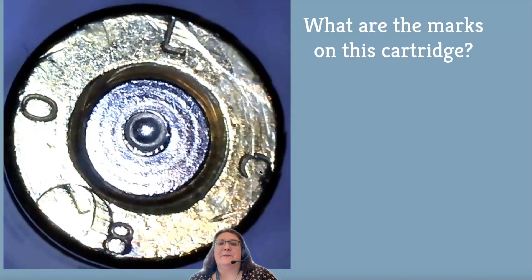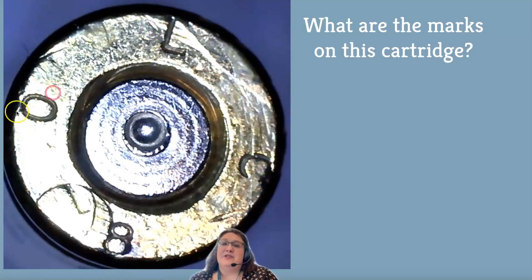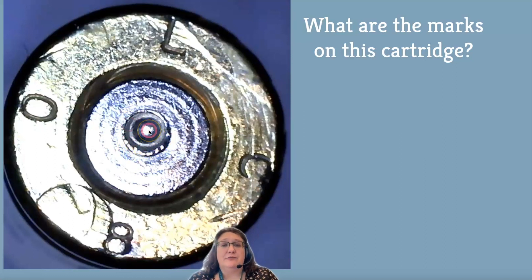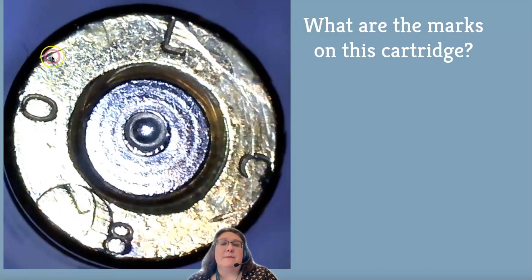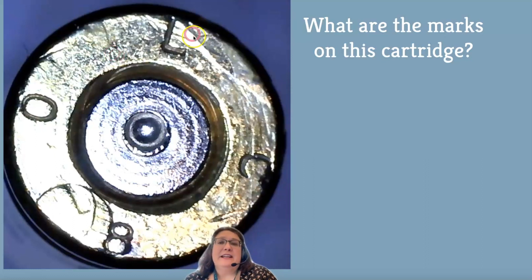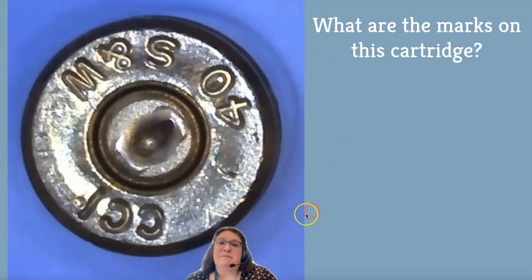Let's review the marks on a cartridge case. Notice there's an 'LC' here — that's Lake City, the manufacturer. There's '08' here, that's probably the year. Notice the firing pin mark in the center — it's round and pretty much centered. There's also an ejector mark visible. Those are the key things to identify: manufacturer mark, year, a round firing pin, and an ejector mark.